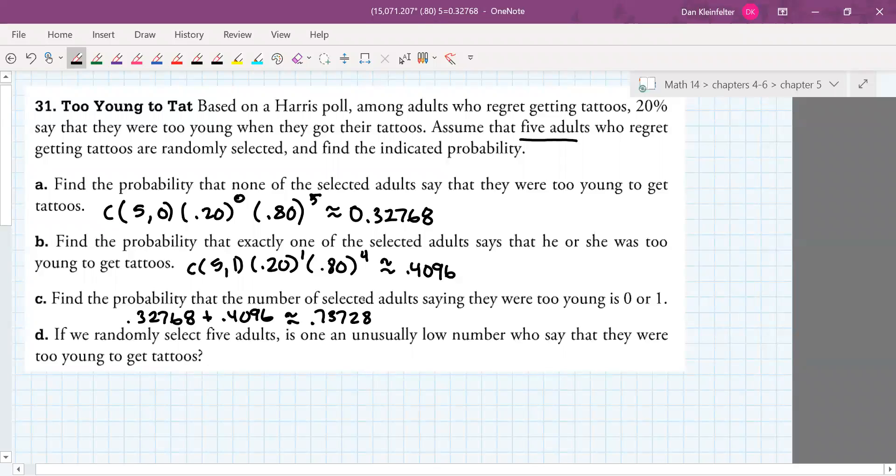And then finally for part D, if we randomly select five adults, is one an unusually low number who say they were too young to get tattooed? So we could also say significantly low there. And the answer there is no. It's not significantly low. Because the probability is about .74, right? So it's way more than .05, which was our criterion for determining whether something was significantly low or not.